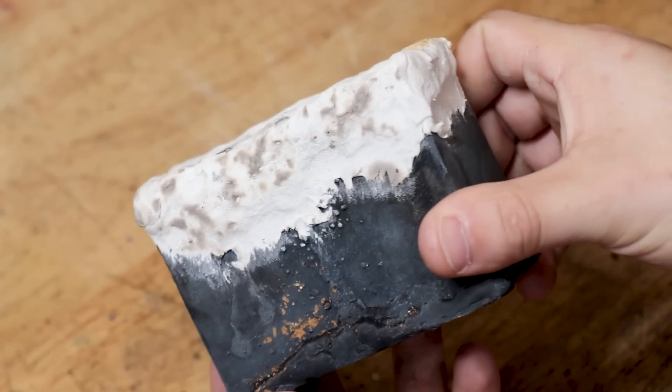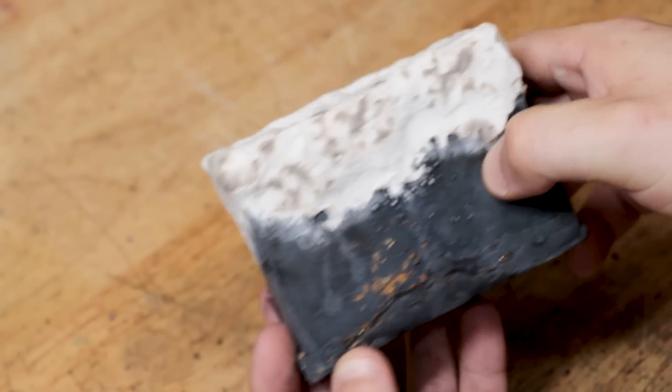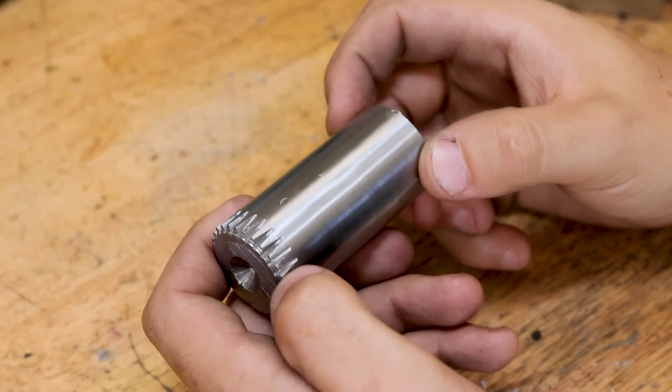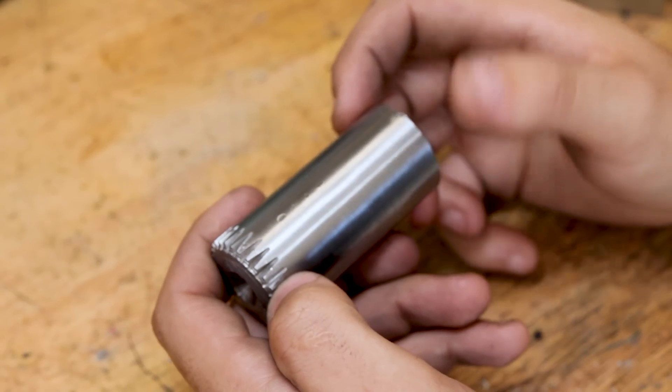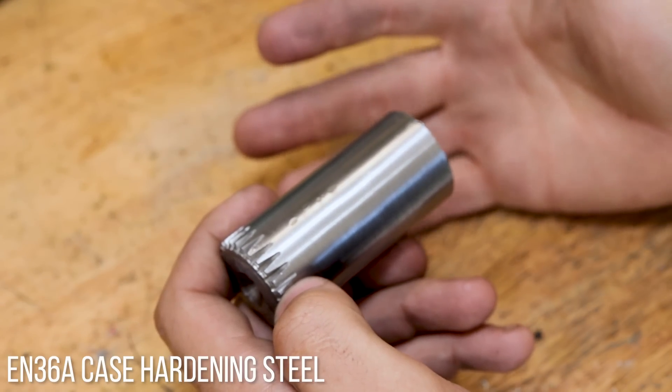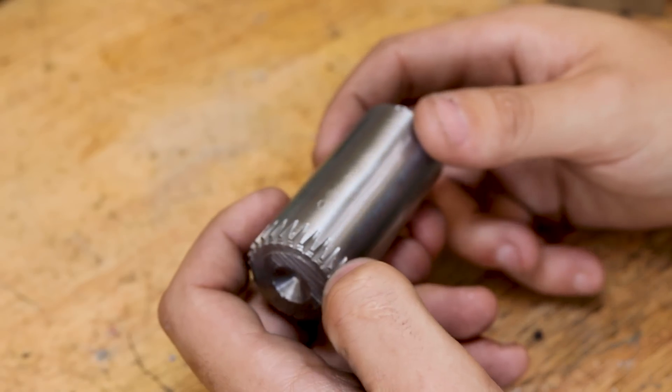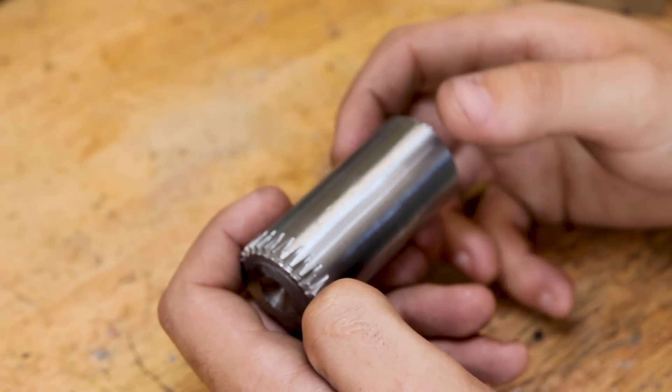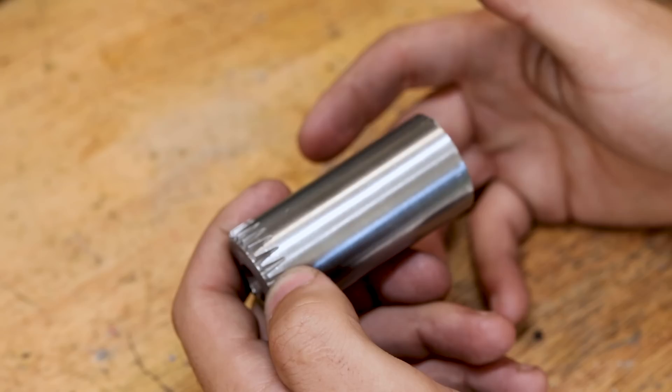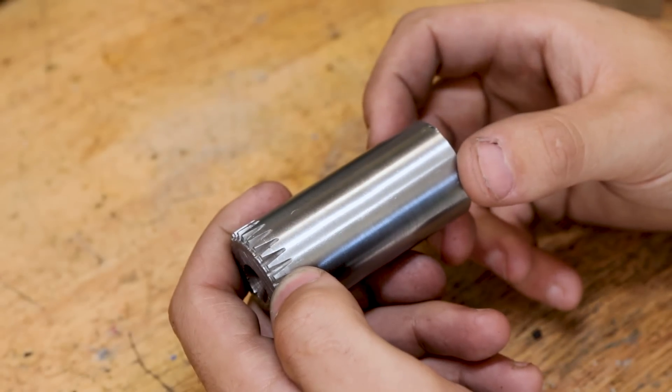As you've probably seen, I've done a bit of case hardening recently on the channel, so to make it a bit more interesting, I've gotten my hands on a piece of EN36A steel. If you've never heard of this stuff before, I can't really blame you. In fact, I'd never really taken much of a notice of this alloy before I started to case harden parts.